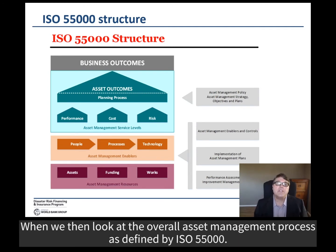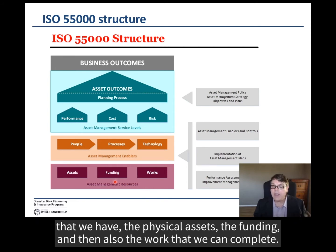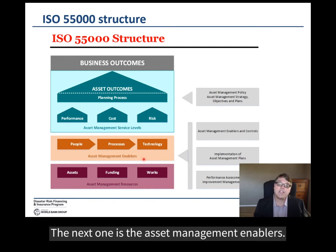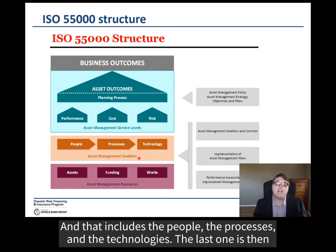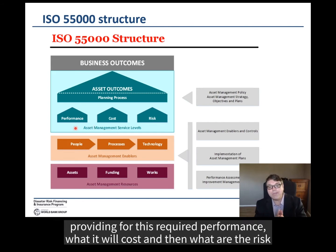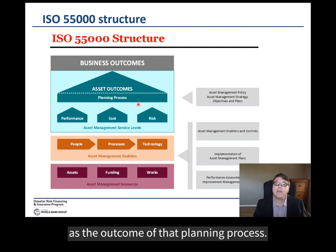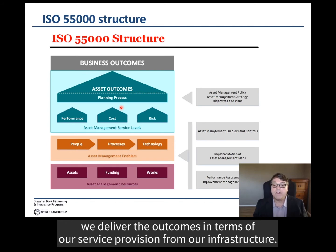Looking at the overall asset management process as defined by ISO 55000, it is divided into a number of areas. The first is asset management resources: physical assets, funding, and the work we can complete. Next are the asset management enablers — the people, processes, and technologies that make the process possible. The last is the asset management service level, which balances the required performance, cost, and risks as the outcome of planning. Through this process, we deliver the outcomes in terms of service provision from our infrastructure.